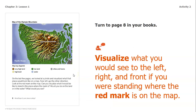We're going to look at page eight and visualize what you would see to the left, right, and in front of you if you were standing where the red mark is on the map. On the last few pages we looked at a photo and visualized what the place would look like on a map — now let's go the other direction. Look at the red mark on the map. Can you visualize what it would be like to stand in that place?